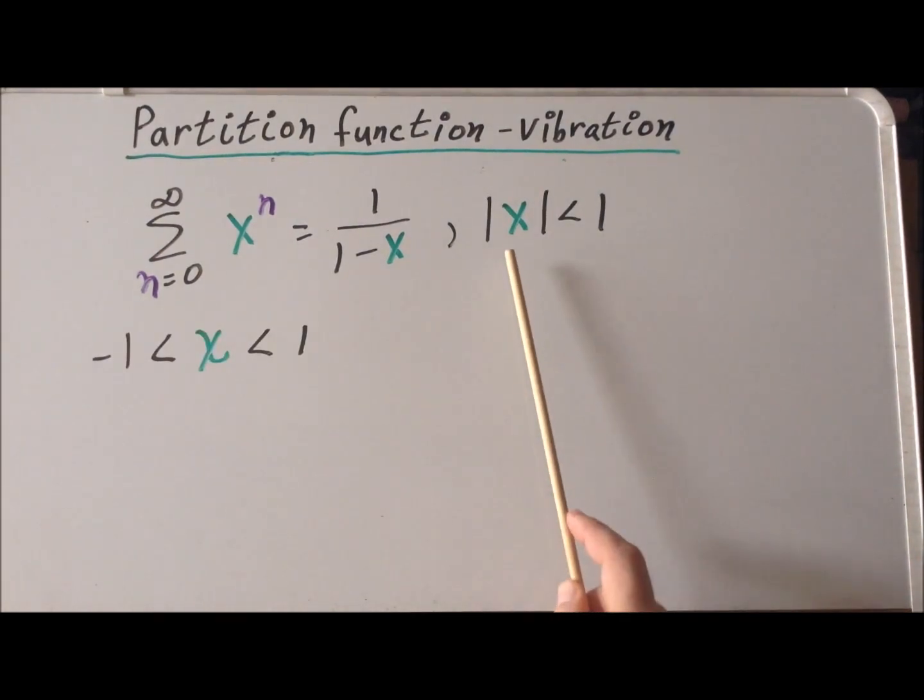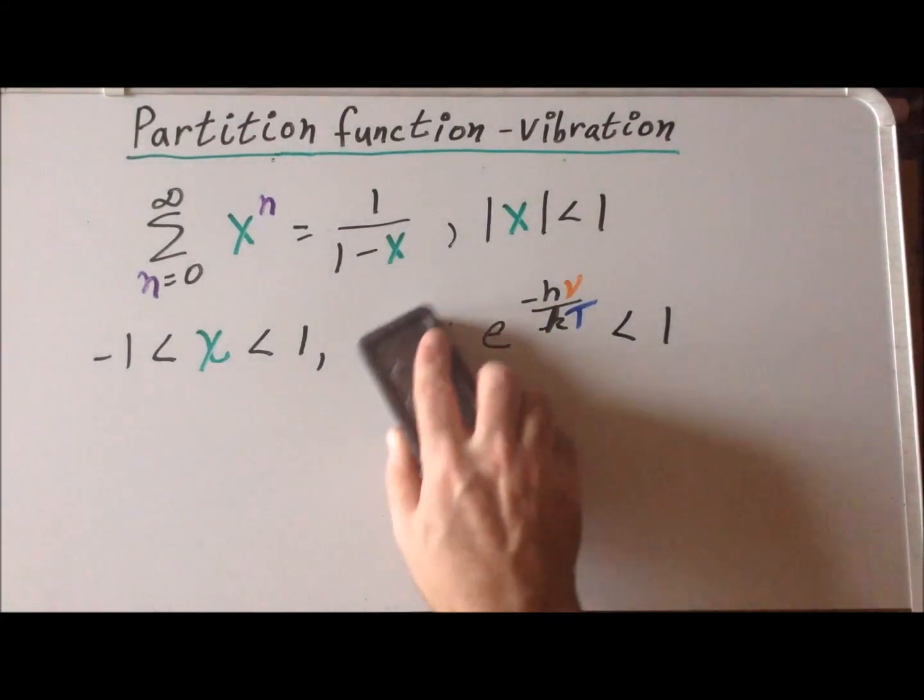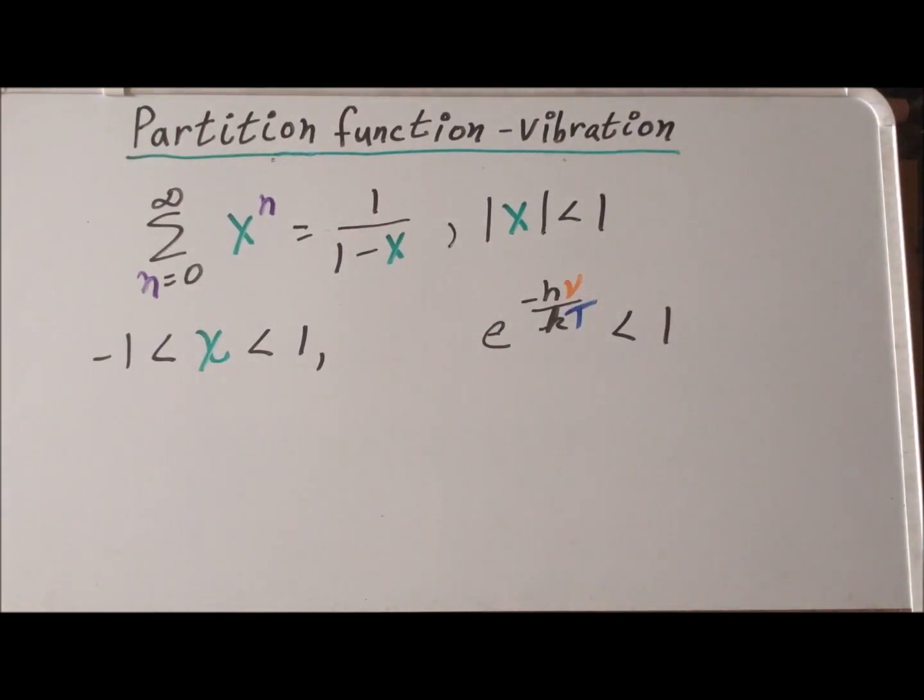Our condition that the absolute value of x is less than 1 is equivalent to this inequality that x is between minus 1 and 1. If we substitute the actual expression that we use for x into the inequality, we get that e to the minus h nu over kT is strictly less than 1 and strictly greater than minus 1. But right away we know from the properties of exponentials that exponentials are non-negative and non-zero, so these are strictly positive. So we can simplify our inequality and simply ignore this condition, which is impossible in this case. So we reduced our problem to showing that e to the minus h nu over kT is strictly less than 1.